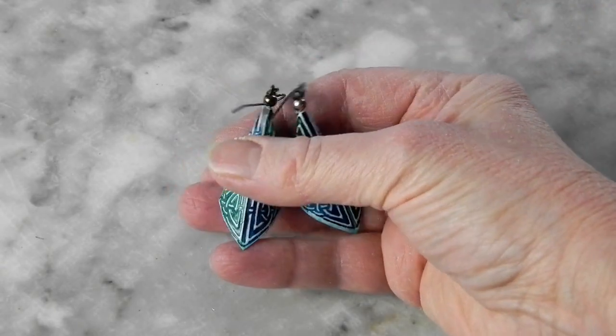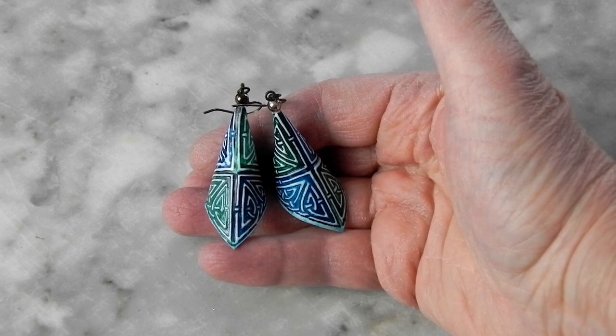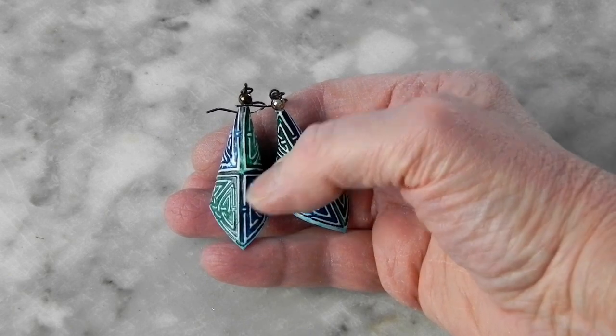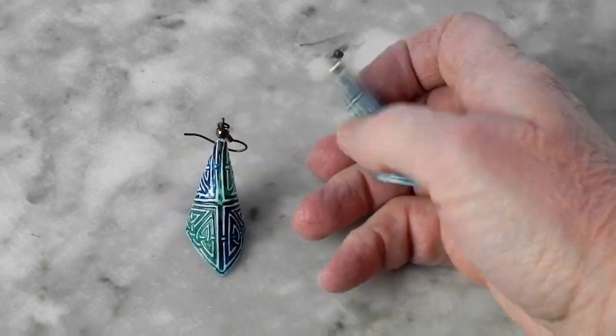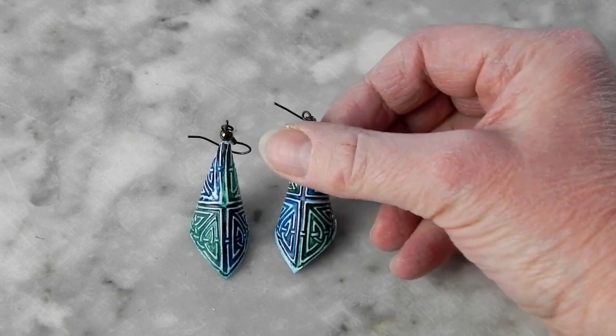Sometimes you have to re-dip things several times to get the exact right shape. By the way, the bracelet, the earrings and the embossing process all have their separate videos, which are linked in the description.